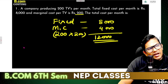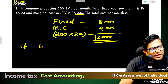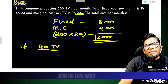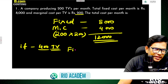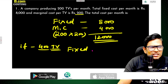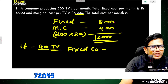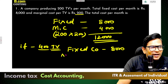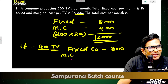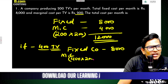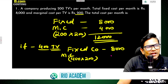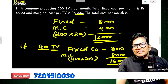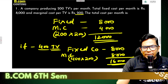So this is the company - 400 TV sets produced. Fixed cost remains the same, but marginal cost - just the aggregate - so he got $16,000. Is that clear?